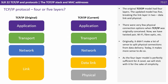The original TCP/IP model had four layers. The updated model has five, breaking the link layer into two: data link and physical. There were very few physical connection options when TCP/IP was originally conceived; now we have twisted pair, wi-fi, fibre optic and more. As the four-layer model is perfectly sufficient for A-level, we'll stick with it for the sake of simplicity.